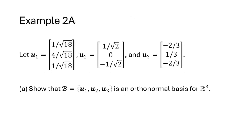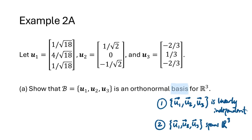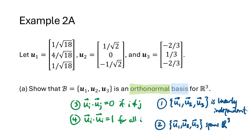Let's look at another example with three vectors u1, u2, and u3. We want to show that B is an orthonormal basis for R3. Being a basis means the vectors are linearly independent and span R3; orthonormal means pairwise orthogonal and each is a unit vector. If we can prove the vectors are pairwise orthogonal, that proves linear independence. Since R3 has dimension three, a linearly independent set of three vectors automatically spans R3. So showing they form an orthonormal set is sufficient to establish they are an orthonormal basis.